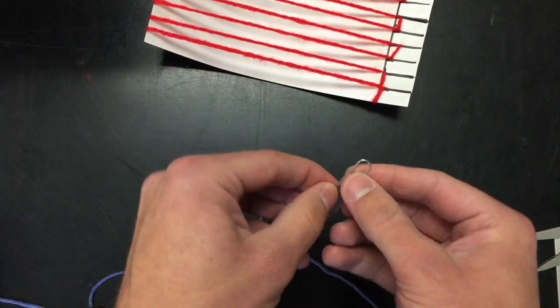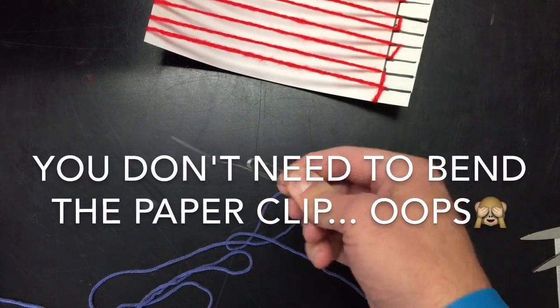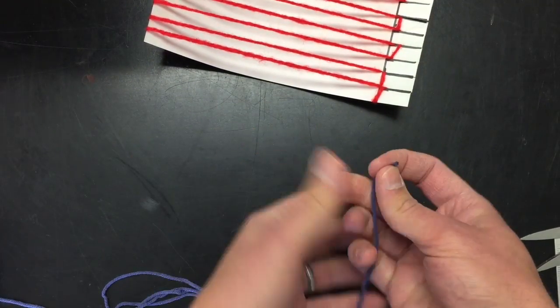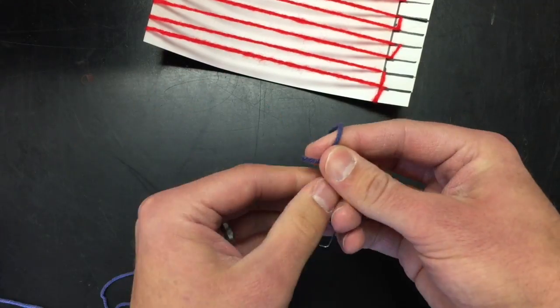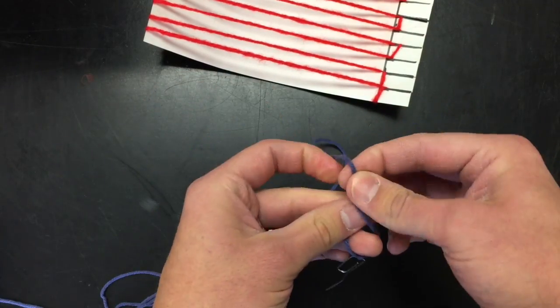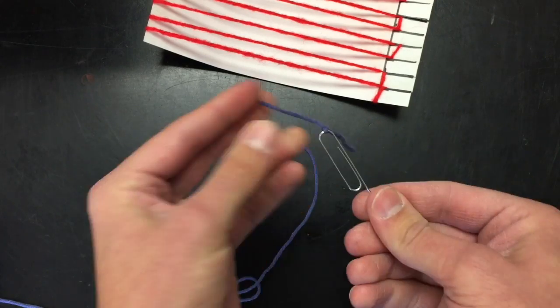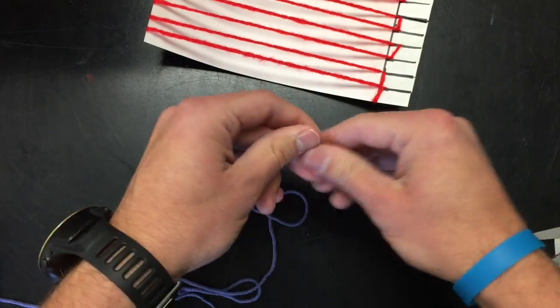Now we're gonna use a paperclip to create kind of a needle to thread the weft strings through those warp threads that we just made. So you're gonna tie whatever color string you want to use around a paperclip. And no, you don't need to bend out the end like I just had written on the screen. You can just use a standard paperclip.